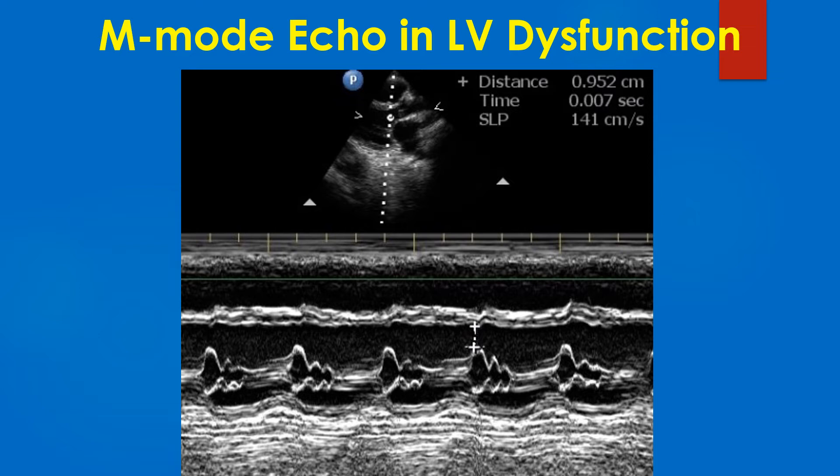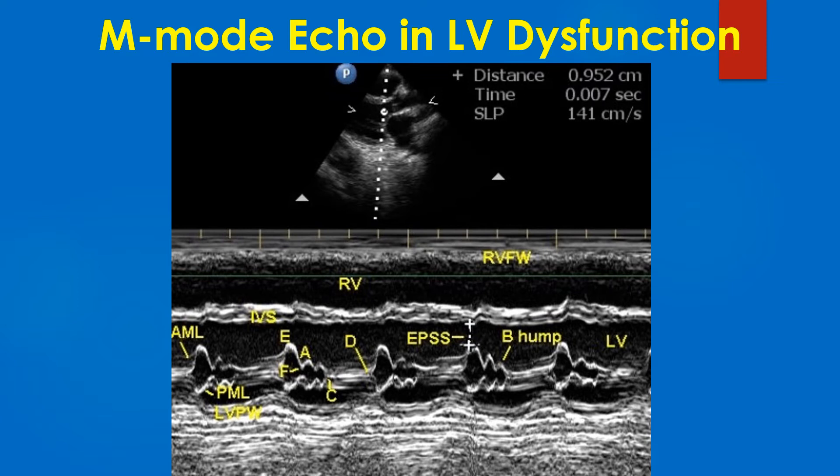It is immaterial whether the cursor is placed in the parasternal short axis view or long axis view, as M mode imaging is one-dimensional — an ice pick view of the heart. The cut in this case is through the tip of the mitral valve rather than at the chordal level, which is used for measuring LV dimensions and estimating the ejection fraction. Here the cut has been taken at the tip of the mitral valve to demonstrate other features of LV dysfunction in this case.